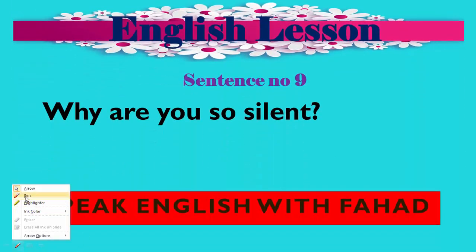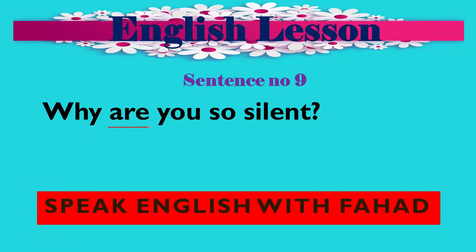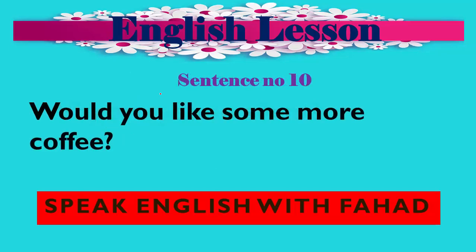Sentence number 9: 'Why are you so silent?' — آپ اتنے خاموش کیوں ہیں۔ Here 'are' is the main verb, not a helping verb. This shows present situation, present condition — it is present simple tense, not like the first form of an indefinite verb.